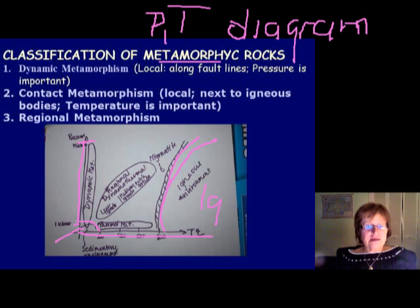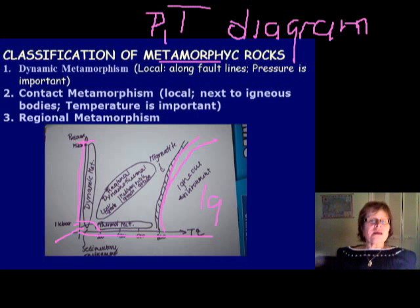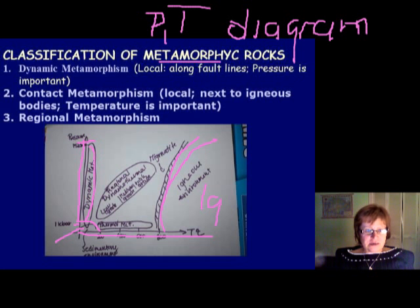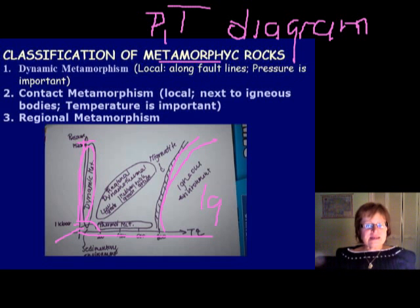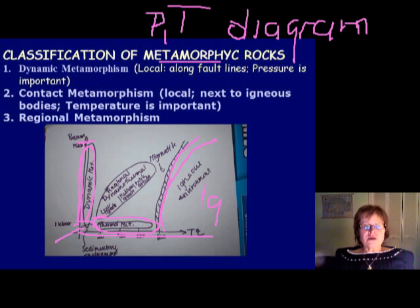On the PT diagram, the igneous rocks region is here, sedimentary is here, and the metamorphic region is where pressure and temperature are both pretty high. The first metamorphic type is dynamic metamorphism, where only pressure is important and temperature is not. This happens locally, mostly along fault lines.